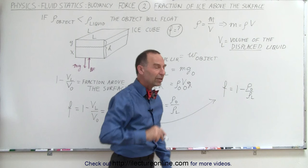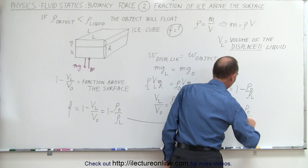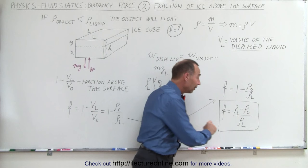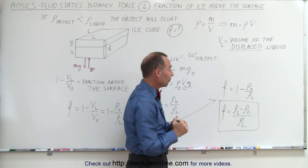Combining these results, the fraction above the surface equals 1 minus the density of the object divided by the density of the liquid. Rearranging algebraically with a common denominator, the fraction equals the density of the liquid minus the density of the object, all divided by the density of the liquid. That is the best way to write that equation. So if you know the density of the object and the density of the liquid, and the density of the object is less than that of the liquid — making this a positive number — you have the fraction above the surface.